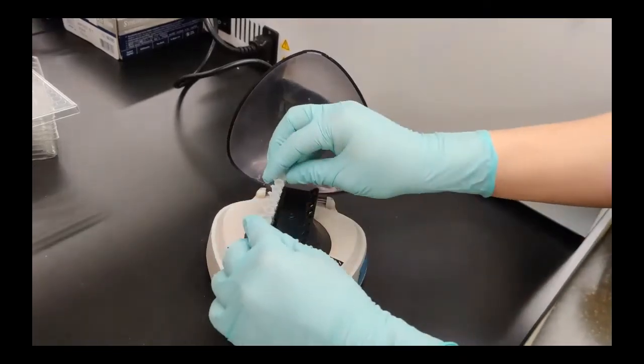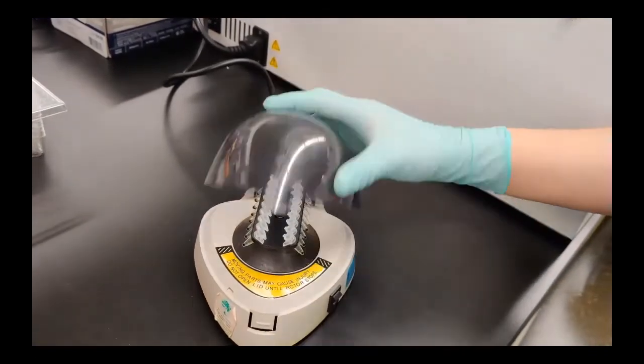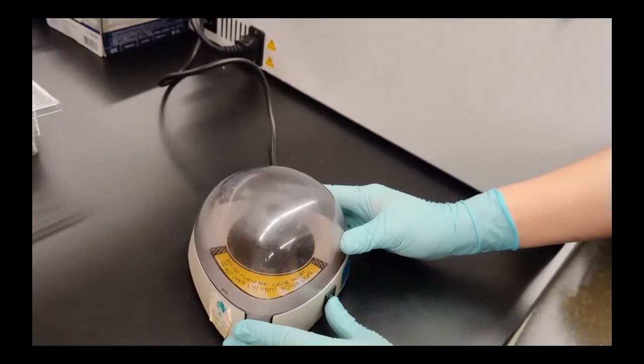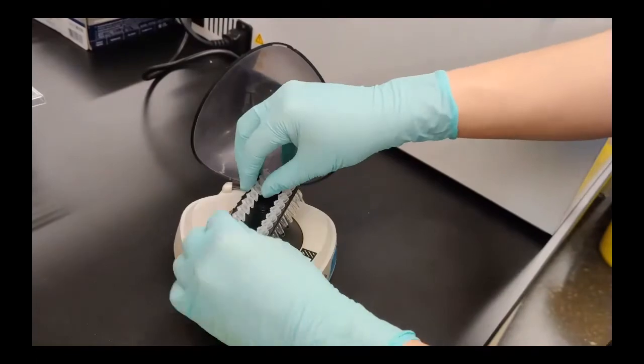To make sure all the samples and all the liquids are at the bottom of the tubes, we will use a centrifuge, a smaller one than the one we used earlier, to make sure all the liquids are at the bottom.